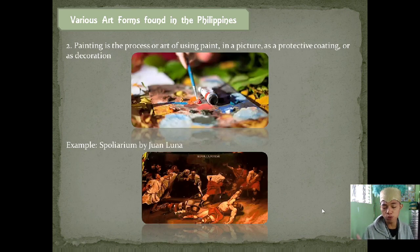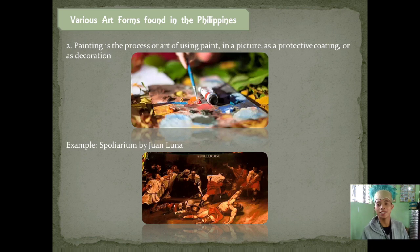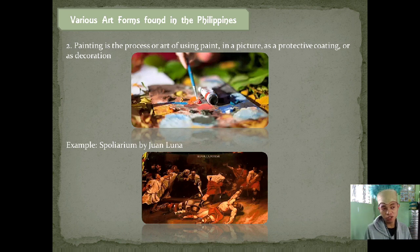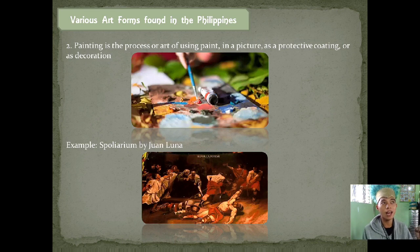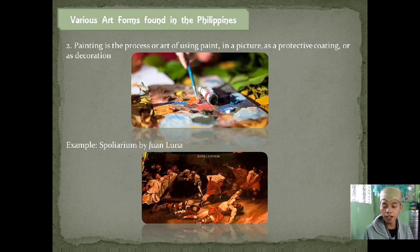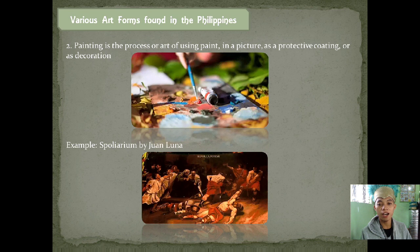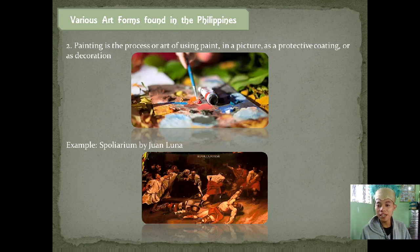Aside from drawing, there is a more colorful art form — painting. Painting is the process or art of using paint in a picture as a protective coating or as decoration. An example of what we'll be working on soon is watercolor painting, such as leaves printing, watercolor blowing, cotton buds printing, and fabric printing. The best example is the Spolarium by Juan Luna.